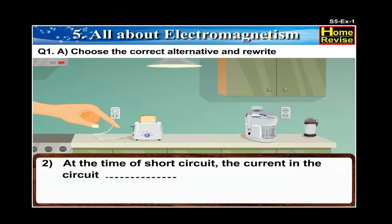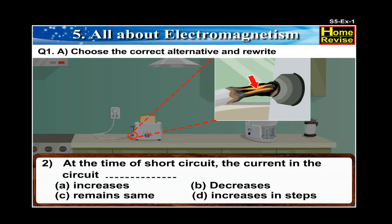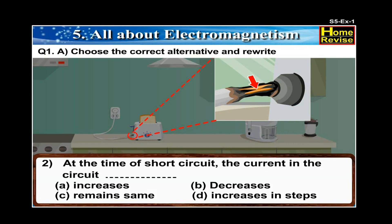2. At the time of short circuit, the current in the circuit dash. A. Increases. B. Decreases. C. Remains same. D. Increases in steps. The answer is: At the time of short circuit, the current in the circuit increases.